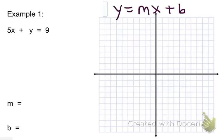Alright, why don't you go ahead and write down example 1. Our equation is 5x plus y equals 9. As you can see, we are not in slope-intercept form. So we are going to have to do some inverse operations to get ourselves into slope-intercept form, or y equals mx plus b form.